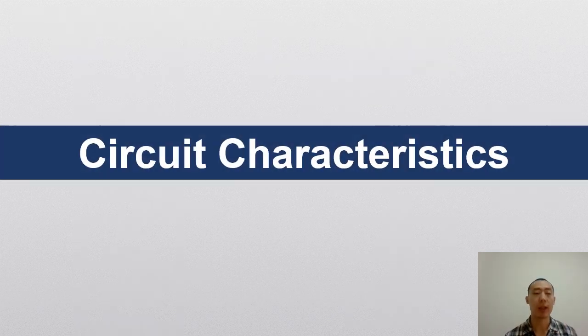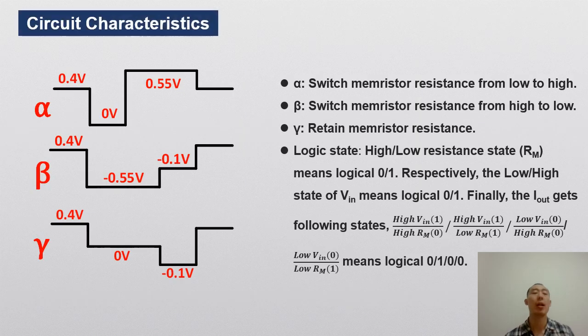The following part is the circuit characteristics. As I said, the operation pulse of the logic cell gets three parts. The pulse alpha sets logic 0 for the logic cell, which means the alpha pulse will switch the memristor resistance state from low to high.